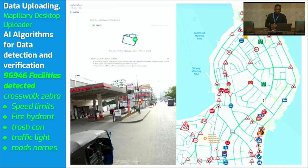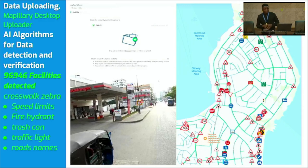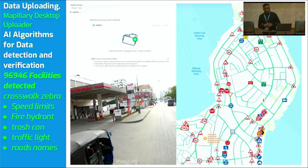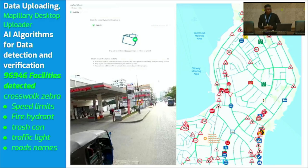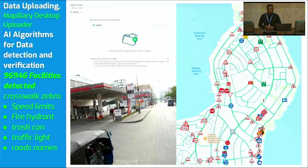From those 400 kilometres of Mapillary coverage, we have managed to detect 96,956 facilities, which include crosswalks, zebra crossings, speed limits, fire hydrants, trash cans, traffic lights, street names, and other features.